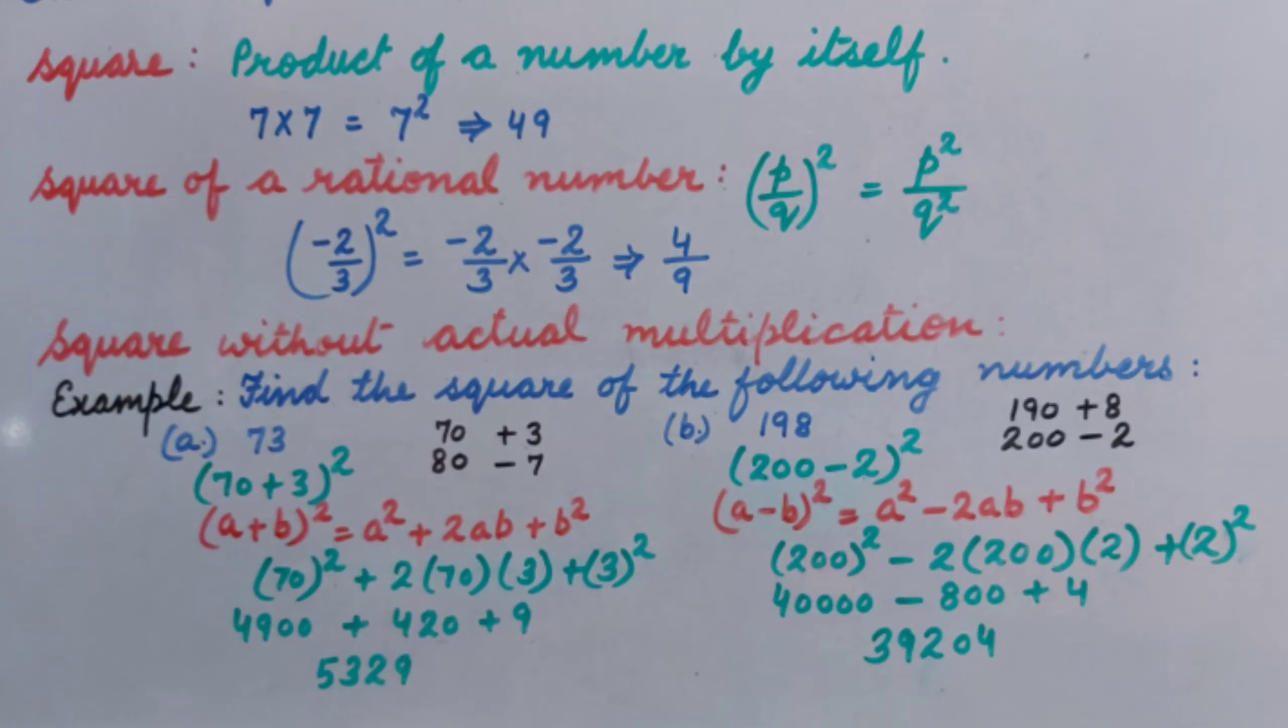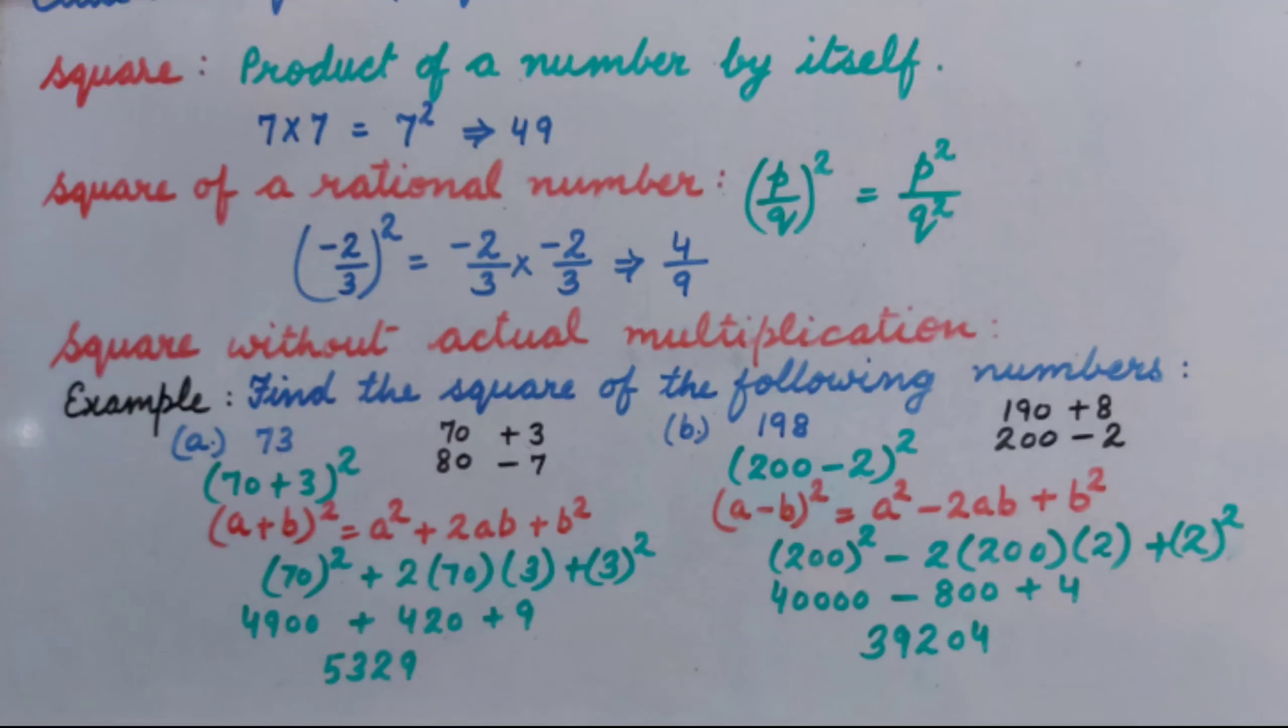Let's see what is square. Square is the product of a number by itself. It means when we multiply a number by itself, the result is the square. Like 7 multiply by 7, that is 7 square, and the product is 49.